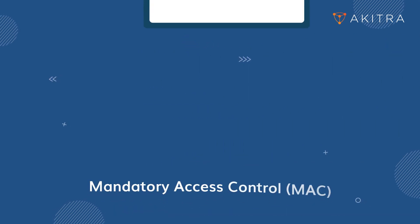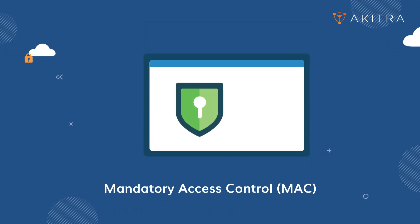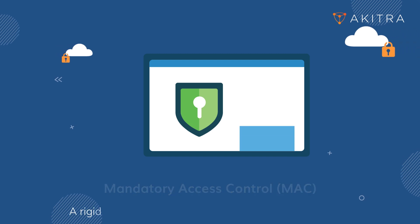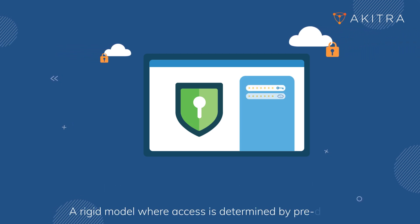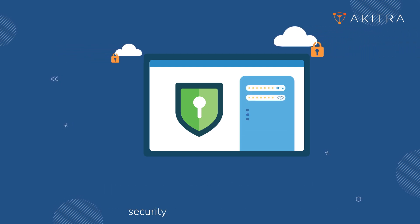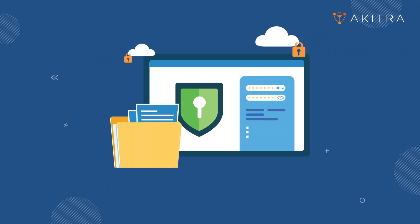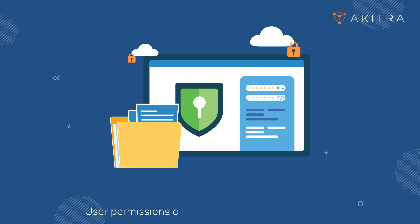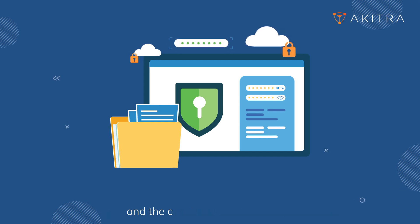Second, Mandatory Access Control: a rigid model where access is determined by predefined security labels and classifications. User permissions are based on their clearance level and the classification of resources.